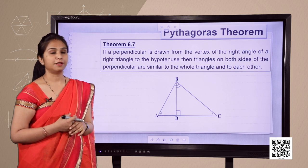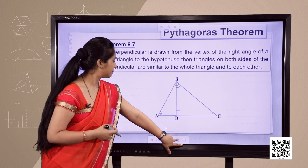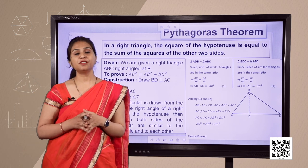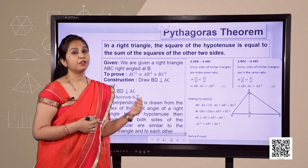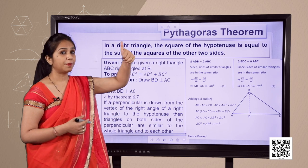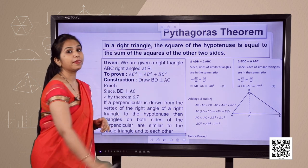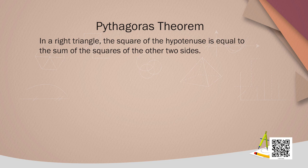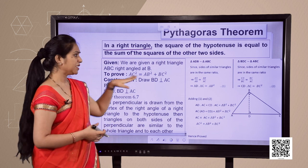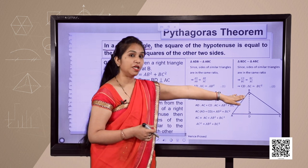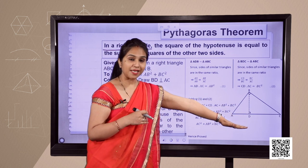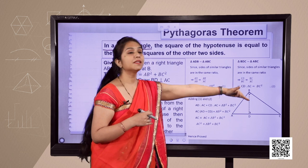Let us start with the proof of Pythagoras theorem. We are very familiar with this theorem since class 7, but the proof is here. The theorem says: in a right angle triangle, the square of the hypotenuse — the longest side — is equal to the sum of the squares of the other two sides, the base and the perpendicular. Triangle ABC is given as a right angle triangle with right angle at B, and we have to show AC² = AB² + BC².